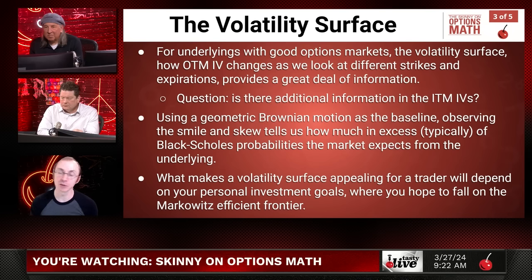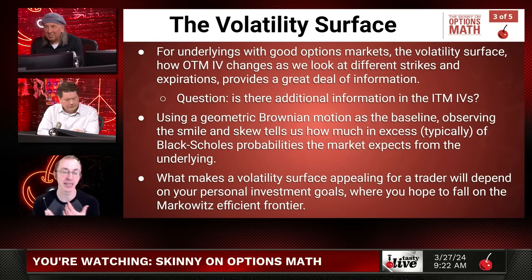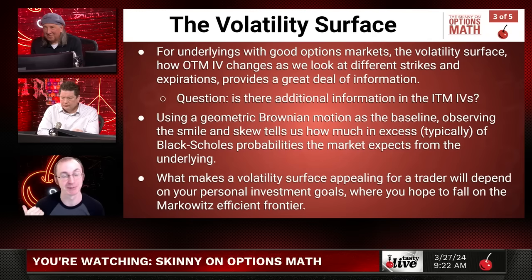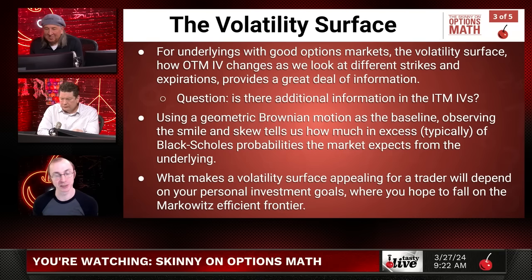Rather than trying to describe in full what the underlying is expected to do, we can say how its expectations vary around a Brownian motion baseline - that makes it a lot simpler. In a similar way to if you're on a plane and you want to tell the person you're flying with that you're going to the restroom, you would say 'I'm going to the restroom' and use the plane's frame of reference, not 'I'm going to the spot over Indiana where the restroom happens to be right now.' By pinning yourself to geometric Brownian motion as your frame of reference, everything is a lot simpler to discuss.